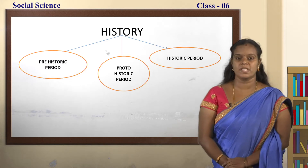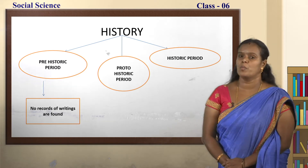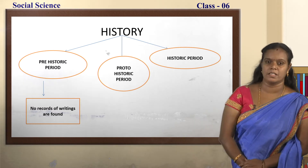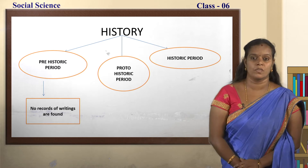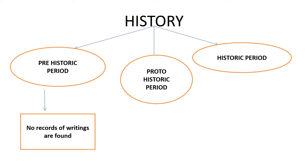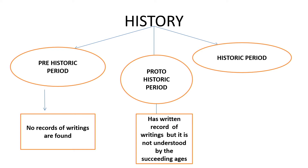Let us see what is prehistoric period. Prehistoric period is a period which has got no written records or writings. Where no records of writings are found is called as prehistoric period. Example for this prehistoric period is the Stone Age. Now we will move on to the second period, that is the proto-historic period.